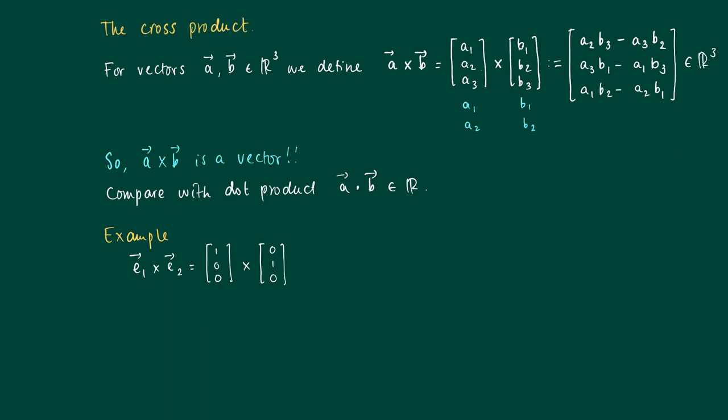So we repeat the first two coordinates of the vector and we form crosses. So again we have 0 times 0 minus 0 times 1, 0 times 0 minus 1 times 0, and 1 times 1 minus 0 times 0. So we end up with the vector (0, 0, 1), which is actually E3.